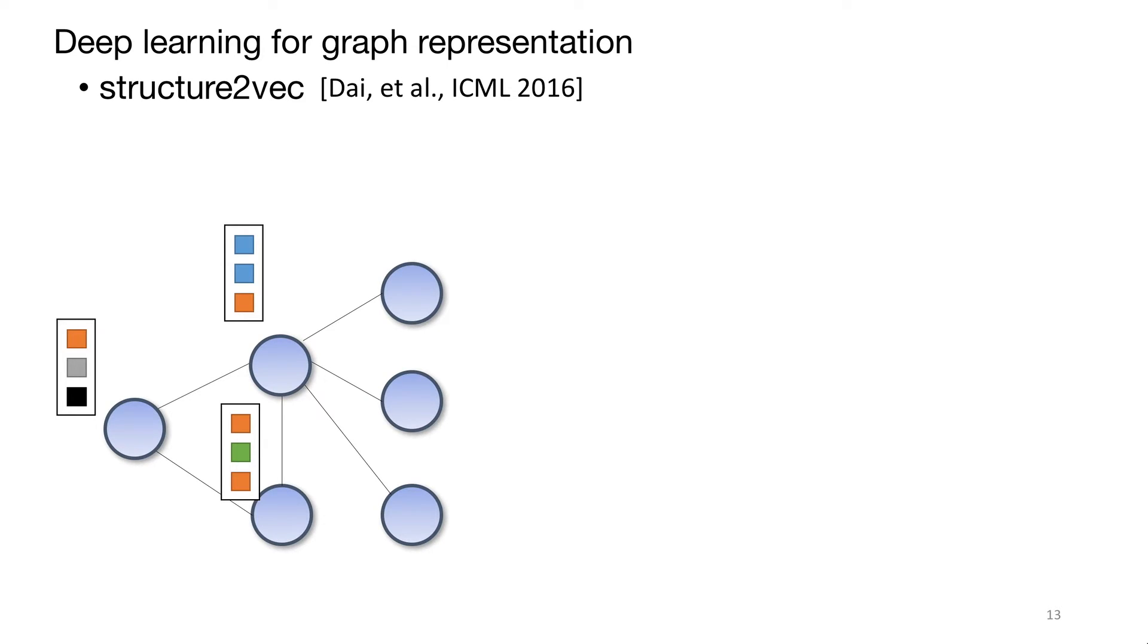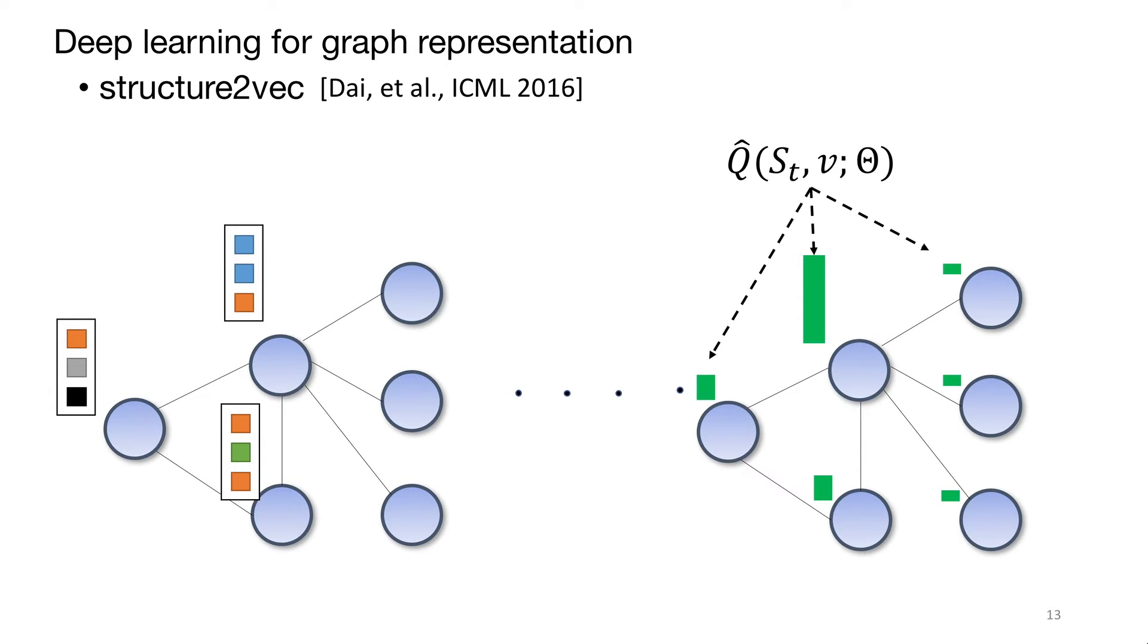The structure2vec computes each node embedding with nonlinear function of neighborhood embedding iteratively. In the last layer, it predicts the Q function on each node.